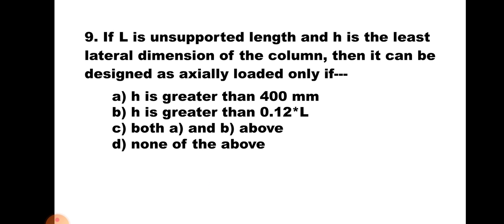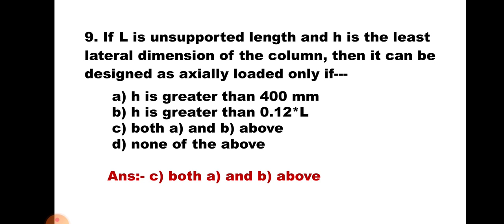Question number 9. If L is the unsupported length and H is the least lateral dimension of the column, then it can be designed as an axially loaded column only if: A) H is greater than 400 mm, B) H is greater than 0.12L, C) both A and B, or D) none of the above. According to IS 456, minimum eccentricity is L/500 plus H/30 and it shall not exceed H/20. Equating these, H must be greater than 0.12L, and equating H/20 to 20 gives H greater than 400 mm. Both A and B must be satisfied. Hence the correct answer is C, both A and B.